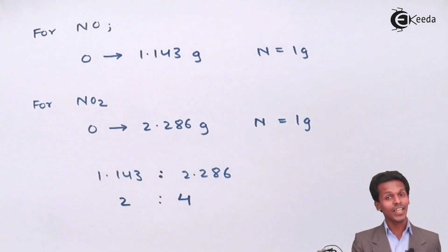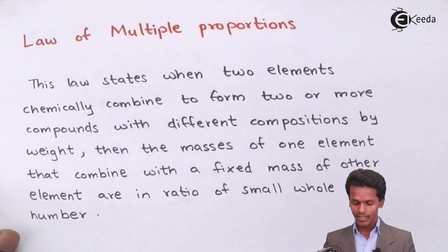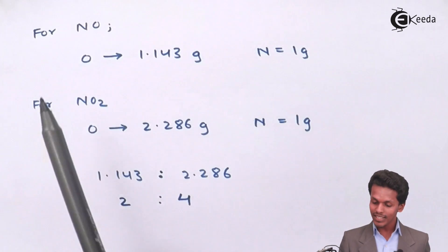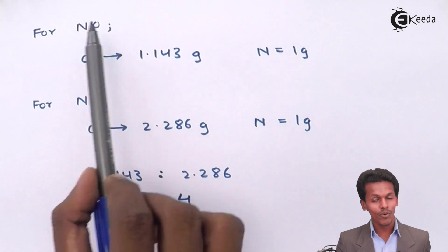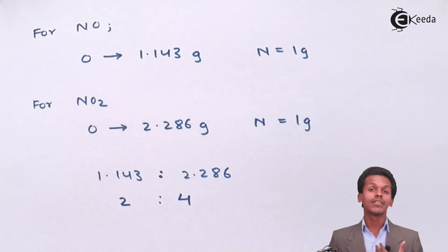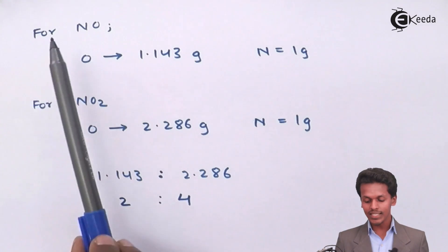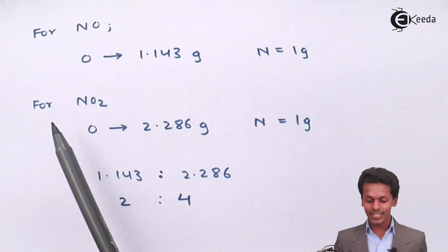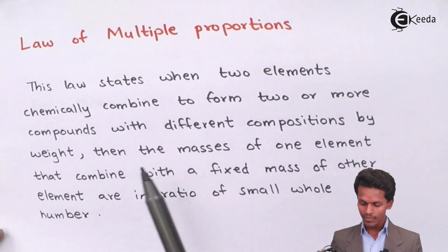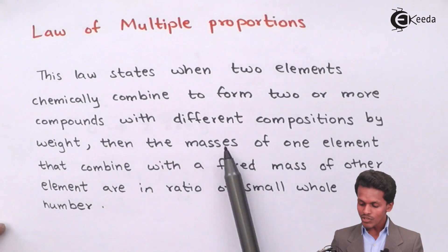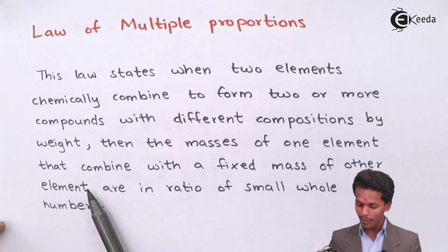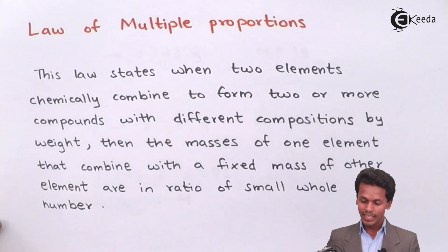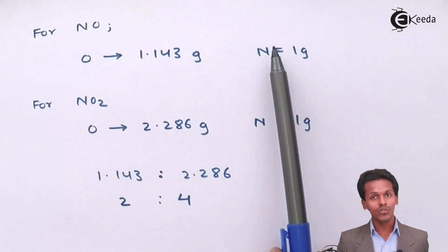Now let us go back to the definition to understand it better. The law states that when two elements chemically combine to form two or more compounds — in this case, nitrogen and oxygen form nitrogen monoxide and nitrogen dioxide — with different compositions by weight, then the mass of one element that combines with a fixed mass of the other element is in a ratio. Here, nitrogen is the fixed element.